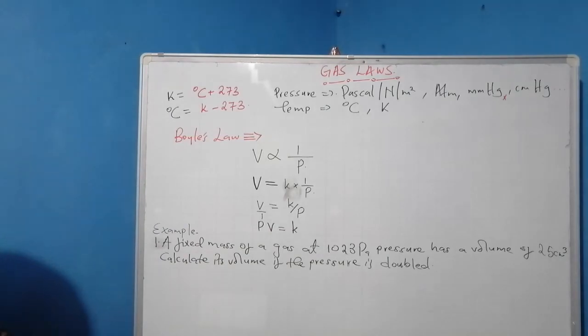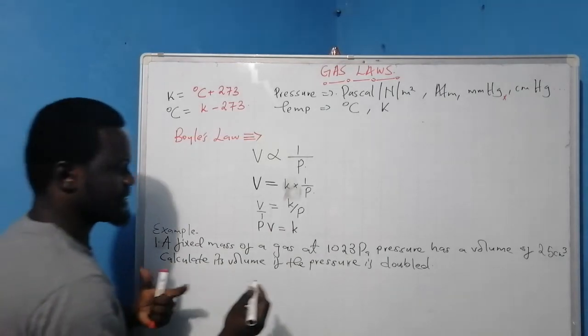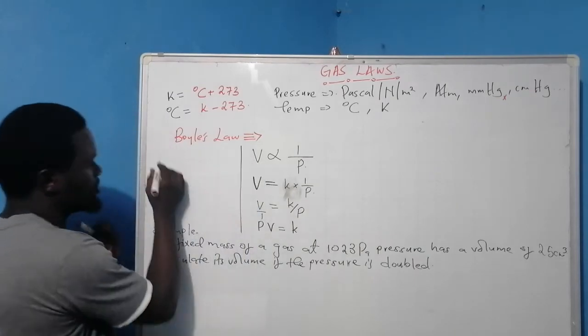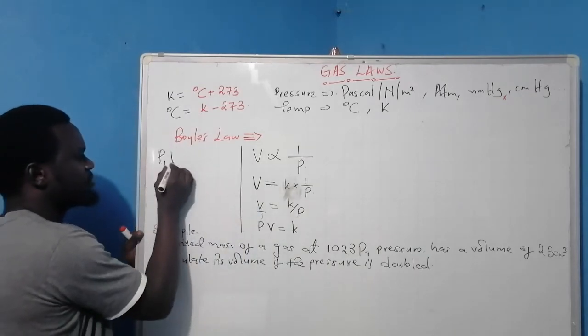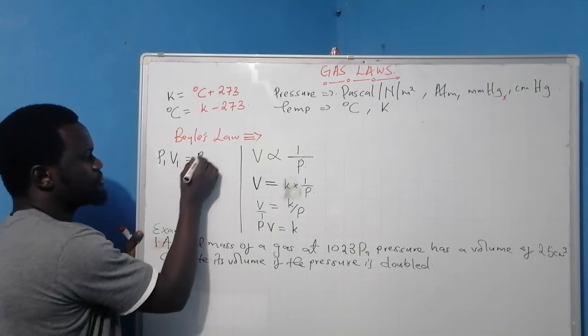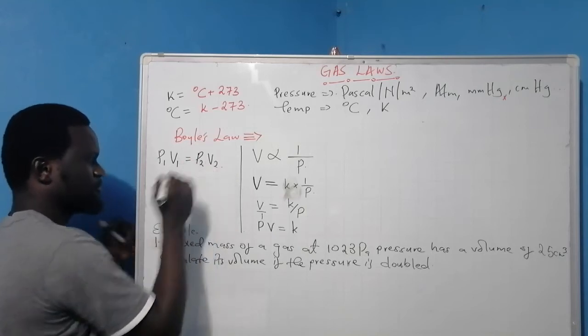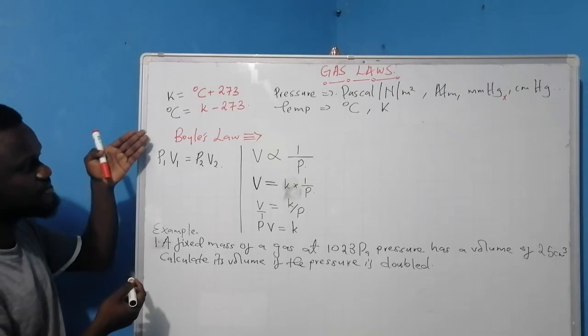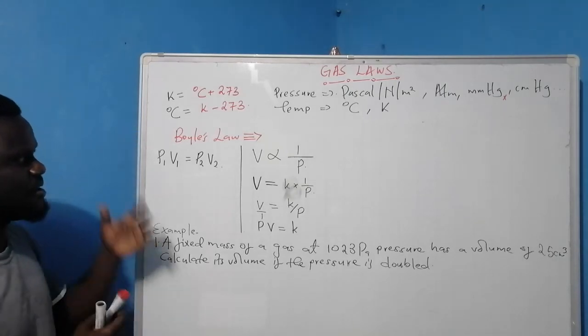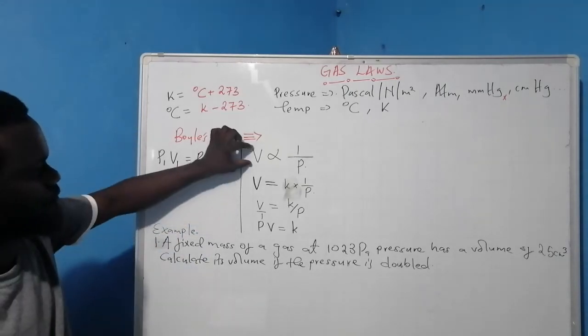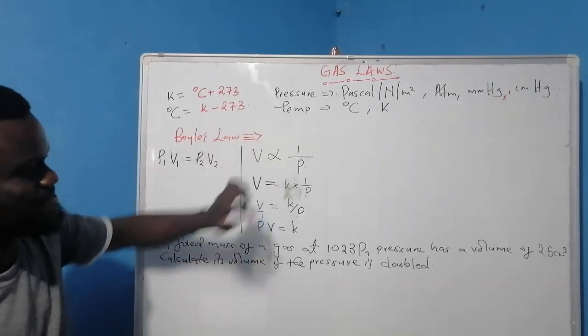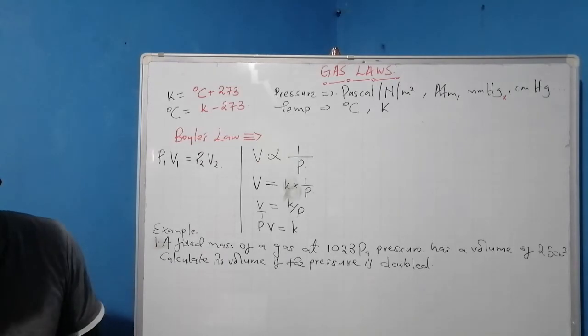So pressure times volume is equal to a constant. It therefore means that I can write the formula for Boyle's Law as P1V1 equals P2V2. It is that very simple. So this is how we derive Boyle's Law. Remember, I said that for a fixed mass of a gas, volume is inversely proportional to pressure. It therefore means that as the volume increases, the pressure decreases.